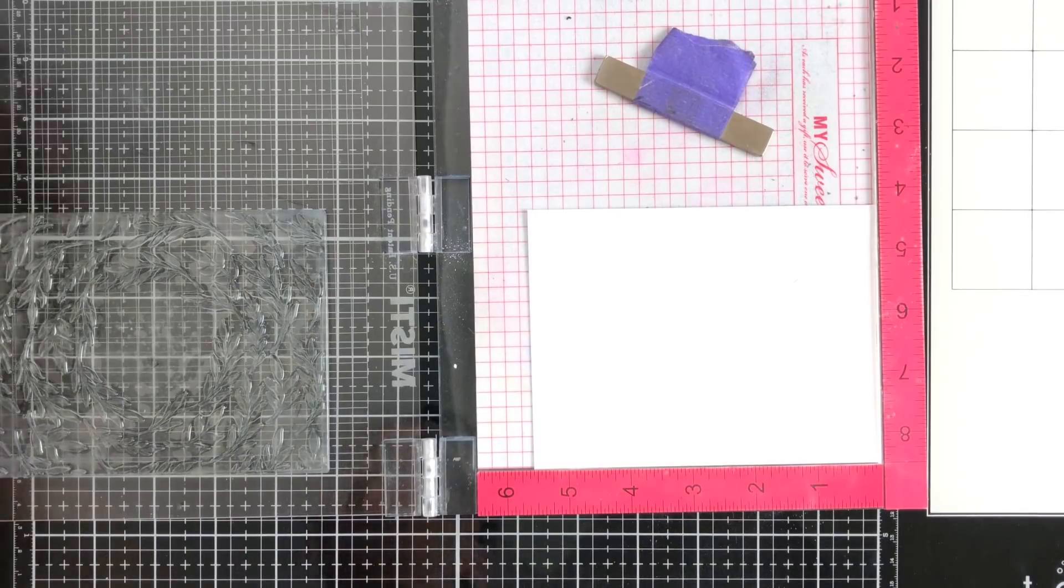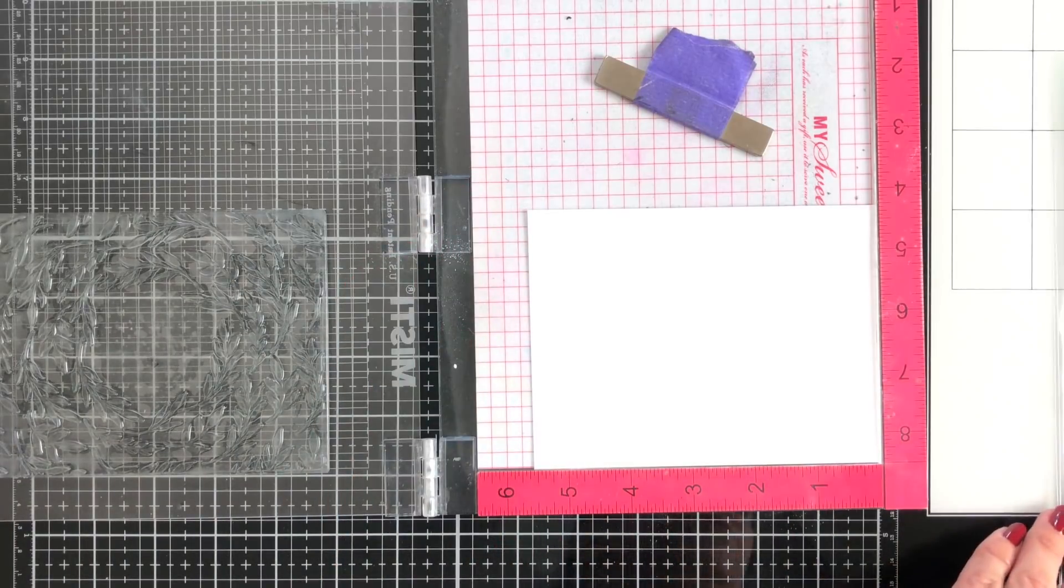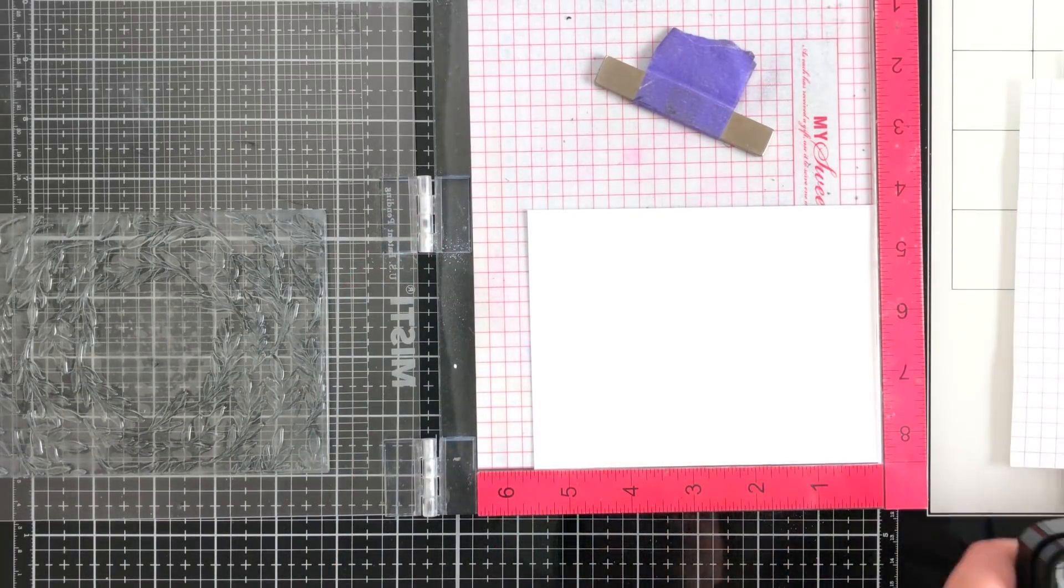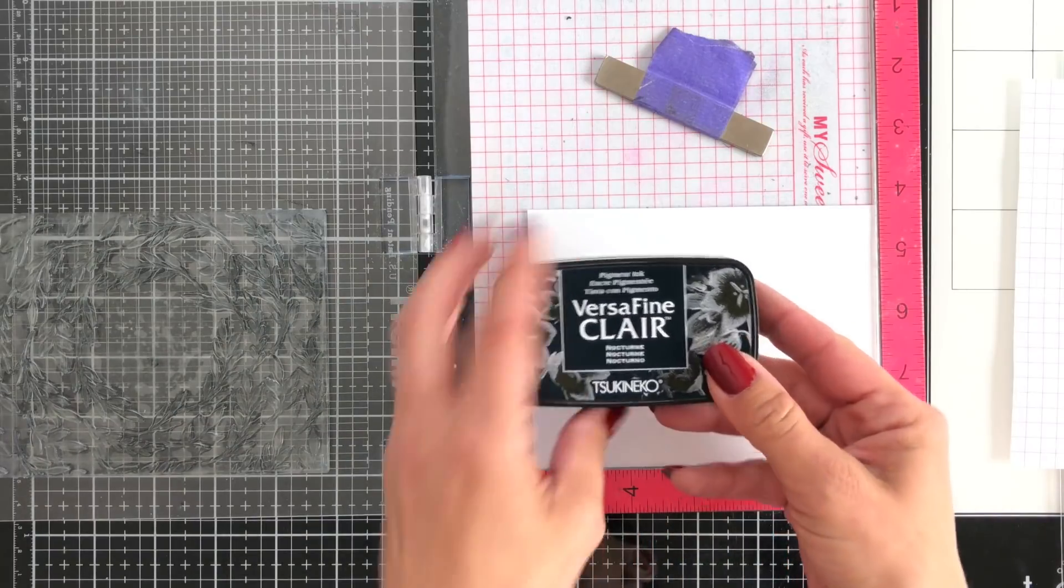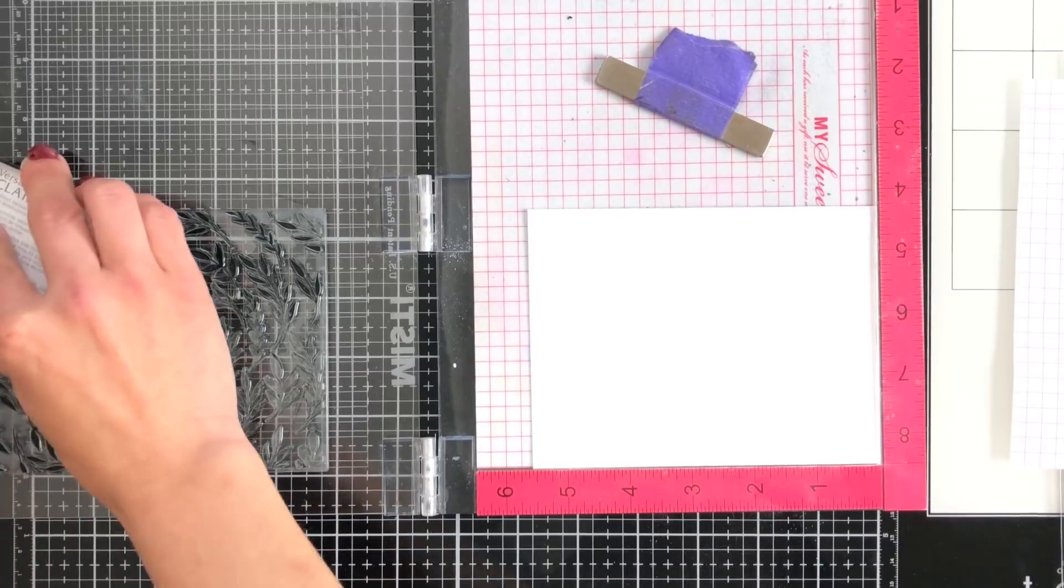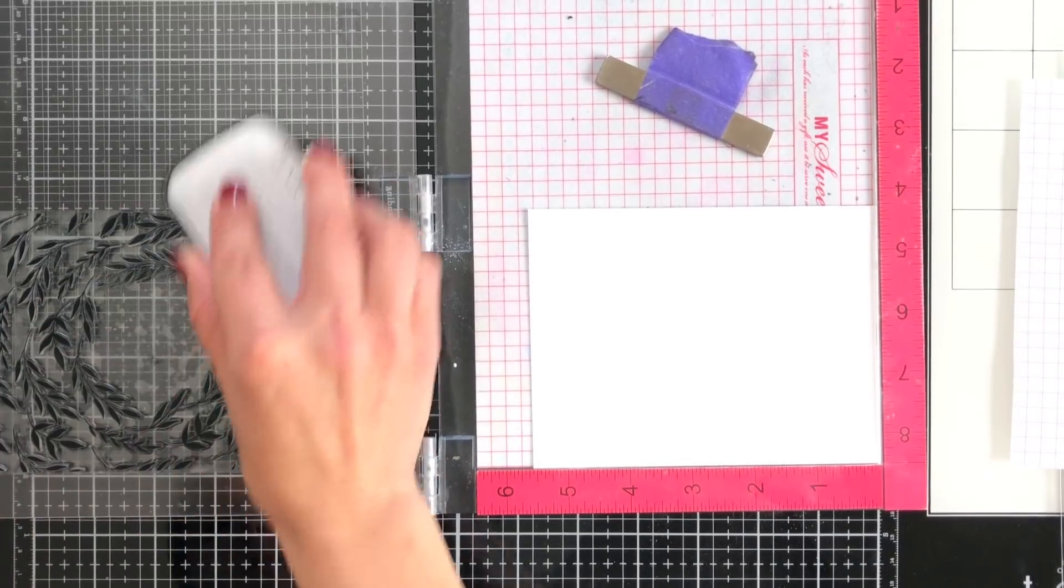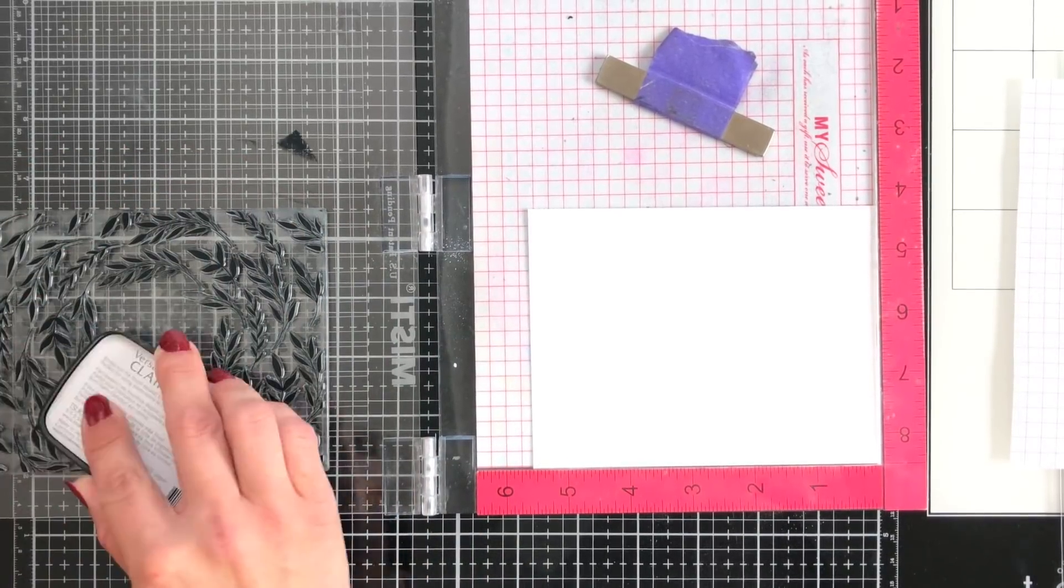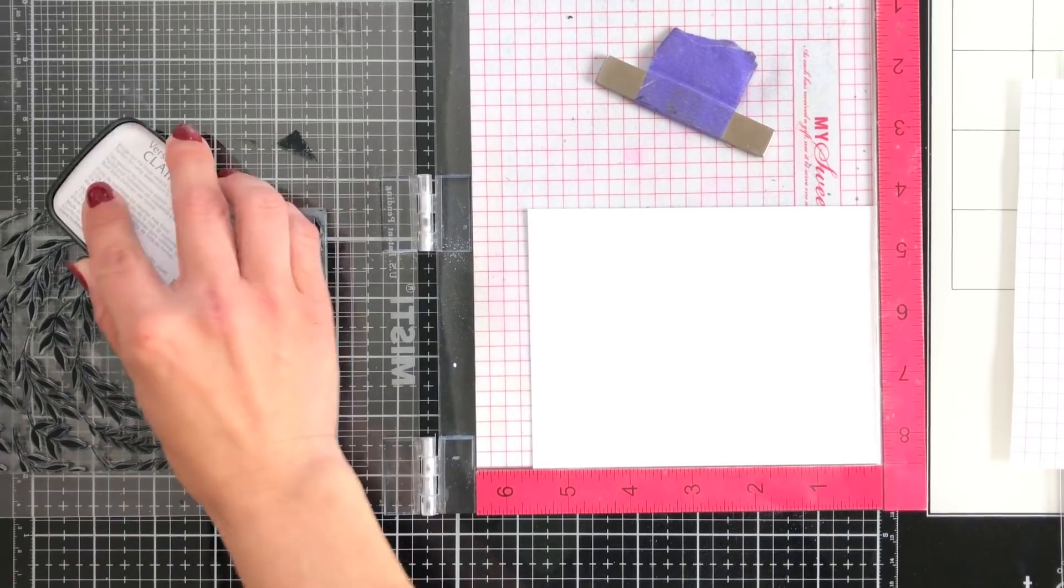So I am prepping my cardstock with an anti-static powder tool because I'm going to be heat embossing on this entire background. I'm using VersaFine Claire ink to do this. This is a really nice thick black ink. It's going to stay wet for me for a little bit so I can do some heat embossing.